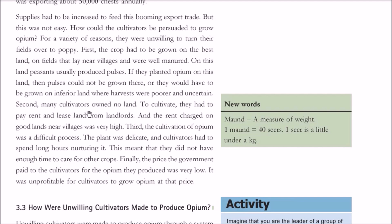Second, many cultivators owned no land and had to lease it from landlords at quite high rents, especially near villages. Third, the cultivation of opium was itself a very challenging and difficult process — the plants were delicate and cultivators had to spend long hours on them, leaving no time for other crops. Fourth, the price the government paid to opium cultivators was very low, making it an unprofitable job.